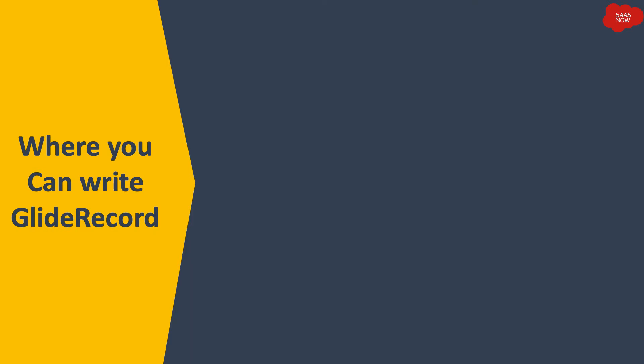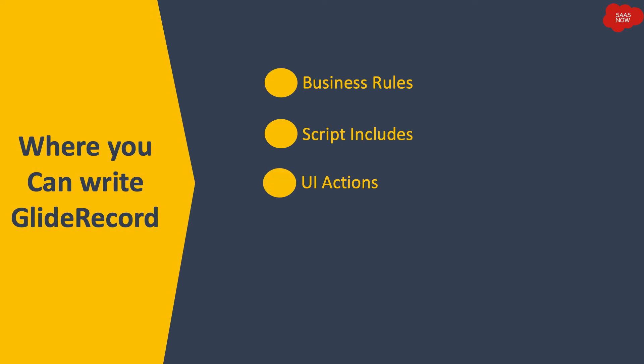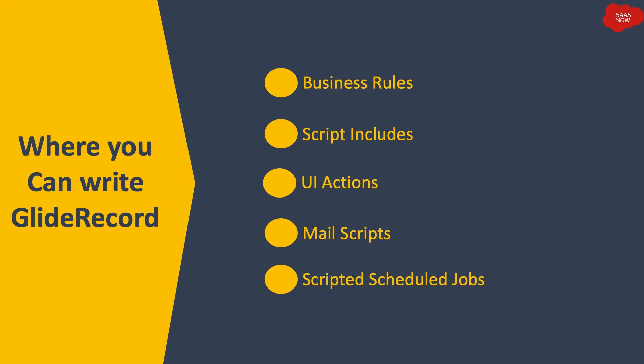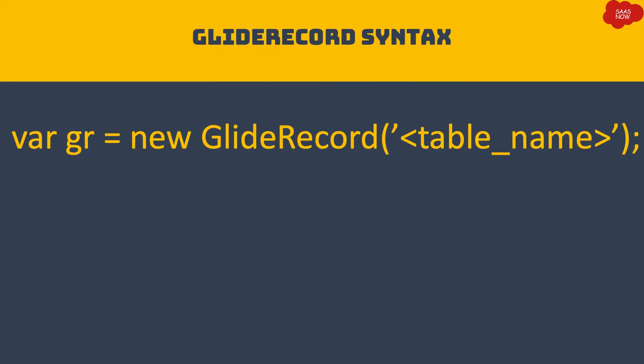GlideRecord should run on the server side. The syntax you write for a GlideRecord script is always run on the server side. You can write GlideRecord scripts in business rules, script includes, UI actions, mail scripts, scripted scheduled jobs, and other server-side elements in ServiceNow. Wherever you can write server-side code, you can use GlideRecord.